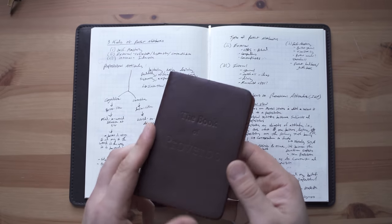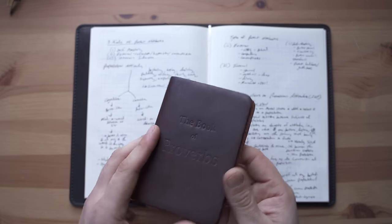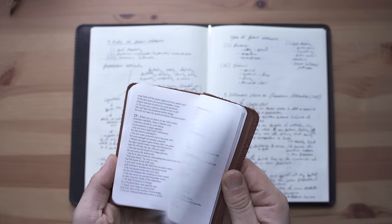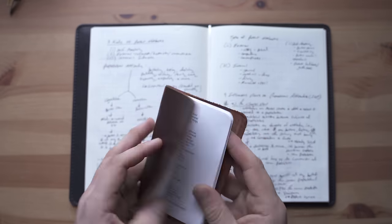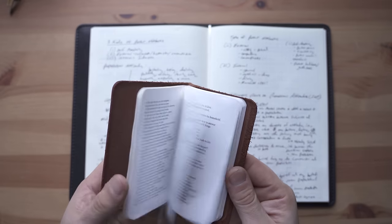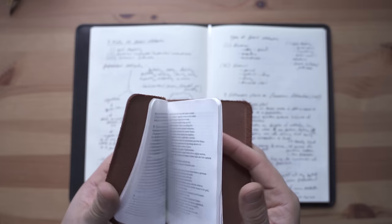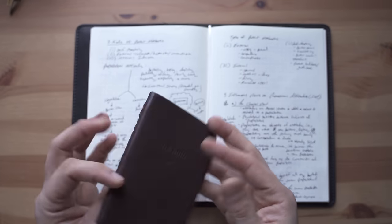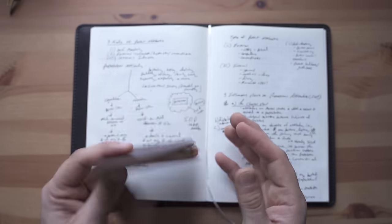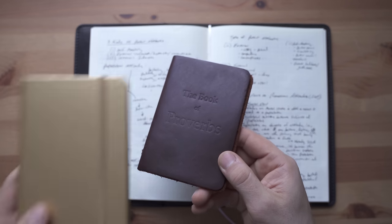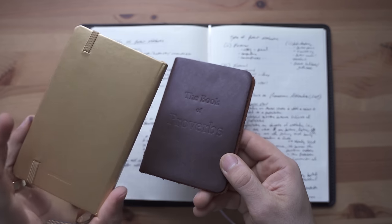Now this isn't a pocket notebook per se, but it is the book of Proverbs in a pocket form. This is a Saddleback Pocket Proverbs. It's the whole book of Proverbs in the N-E-T translation. It's a good translation. And these are also waterproof pages. I love this. It's like a pocket notebook, but it's already been filled in for you.